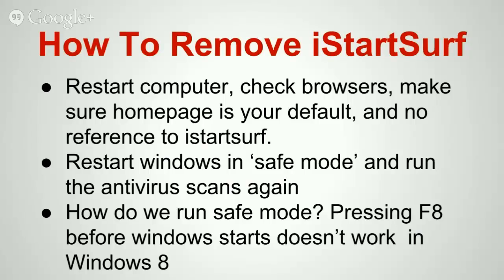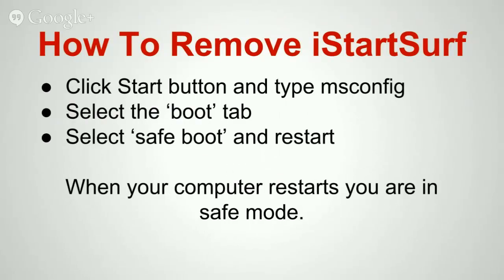The problem is that to run Safe Mode normally you'd restart your computer and then press F8, but this doesn't work in Windows 8. So in order to boot into Safe Mode - and you can use this with Windows 8, Windows 7 and previous if F8 doesn't work - you can type msconfig into the Start menu, select the Boot tab, select Safe Boot and restart. Then when your computer restarts, you're in Safe Mode.